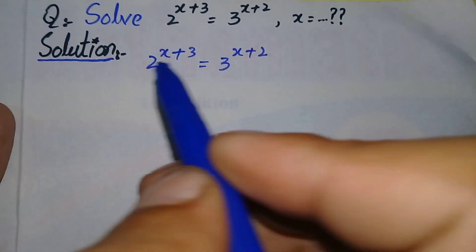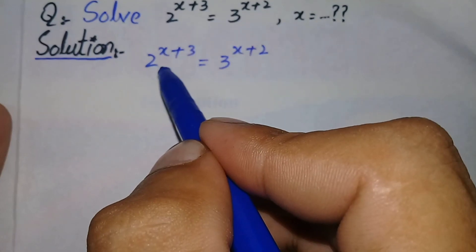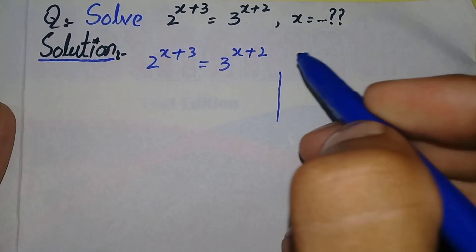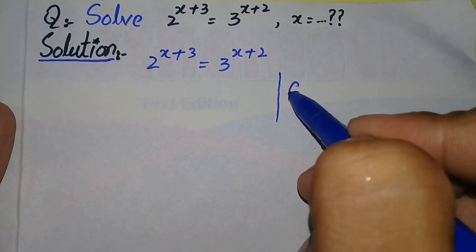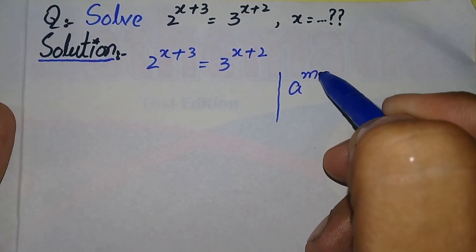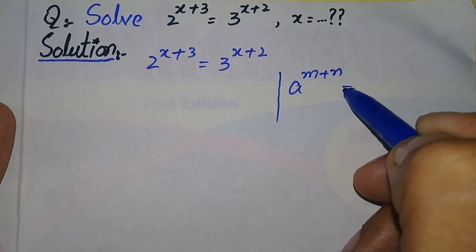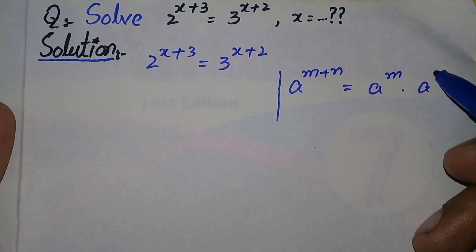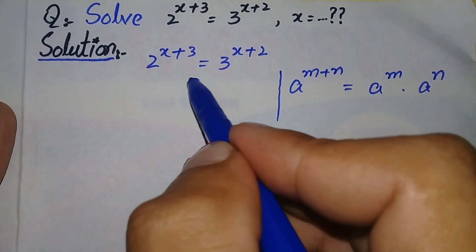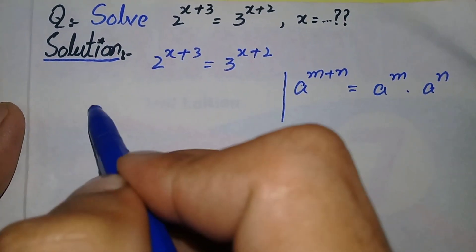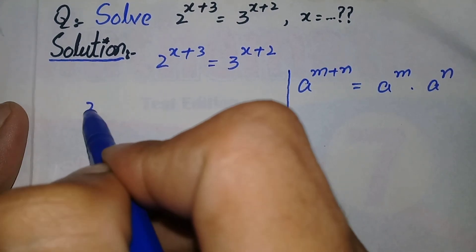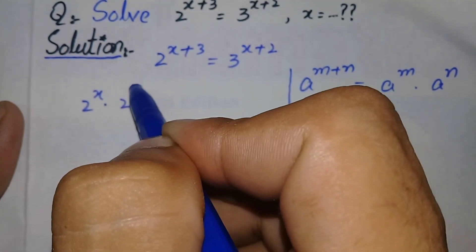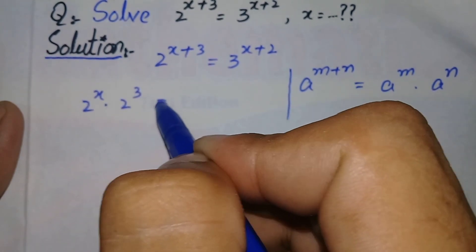In the next step we will use an exponent formula. That formula is: a raised to power m plus n is equal to a raised to power m multiplied by a raised to power n. So this equation will become 2 raised to power x multiplied by 2 raised to power 3 is equal to...